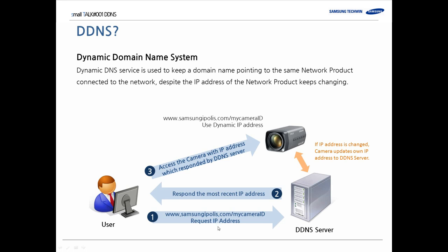www.samsungipolice.com/productid is the domain name of a Samsung network device. If you only memorize the unchanged domain name, the DDNS server updates the domain name with the changed IP address. When you want to use the Samsung DDNS service, access the samsungipolice.com website and register your device to DDNS.